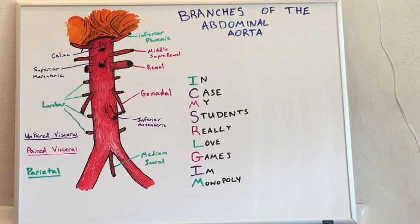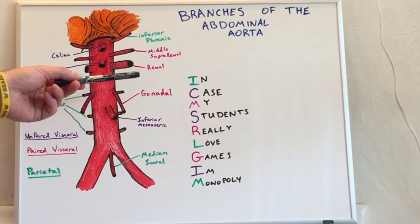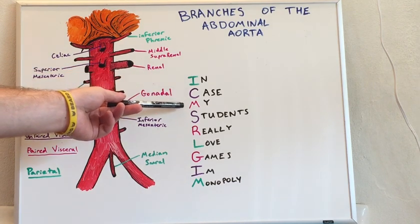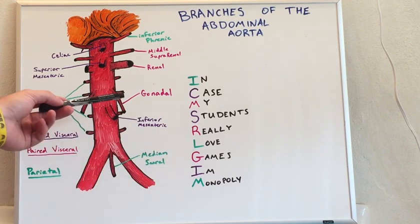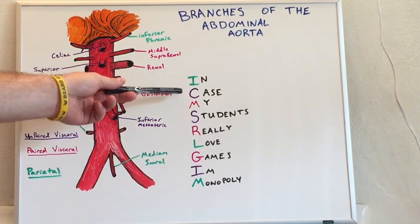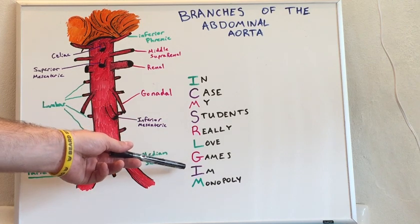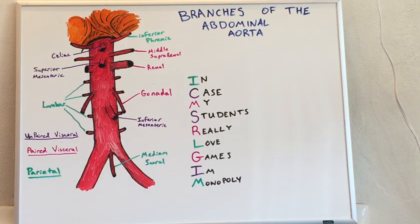Here we have a mnemonic for you to remember the aortal branches in the abdomen: I-C-M-S-R-L-G-I-M. The mnemonic is: 'In case my students really love games, I'm Monopoly.' And those are the branches of the abdominal aorta.